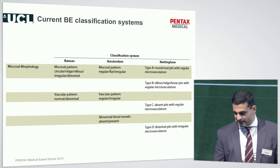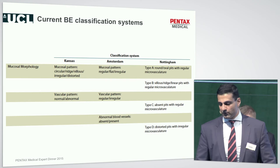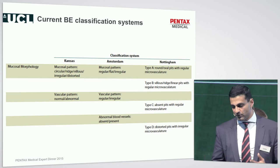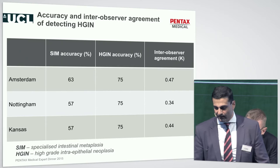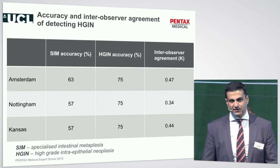In the confines of time, let me show you some data from our own center. Over the past few years, classification systems from Kansas, Amsterdam, and the Nottingham group have classified lesions as regular or irregular based on mucosal and vascular patterns. Even in expert hands, the accuracy of neoplasia detection is at best 75%, and intra-observer agreement is only moderate.